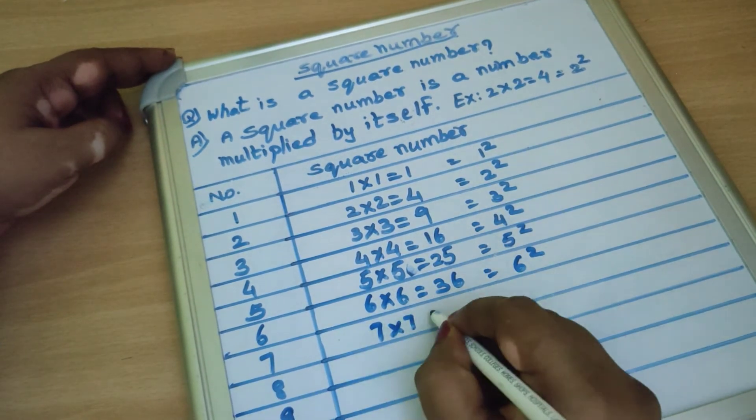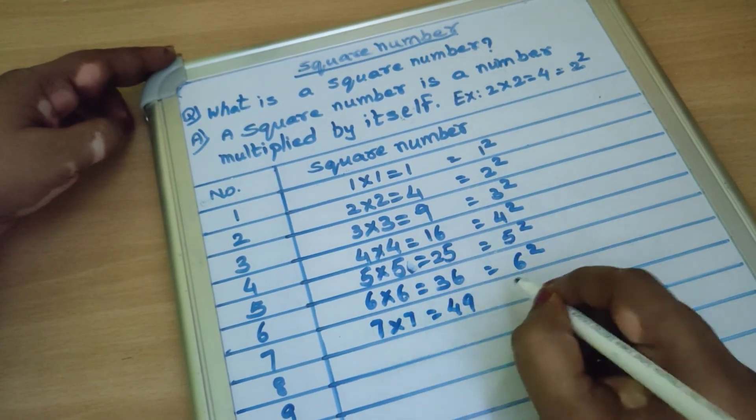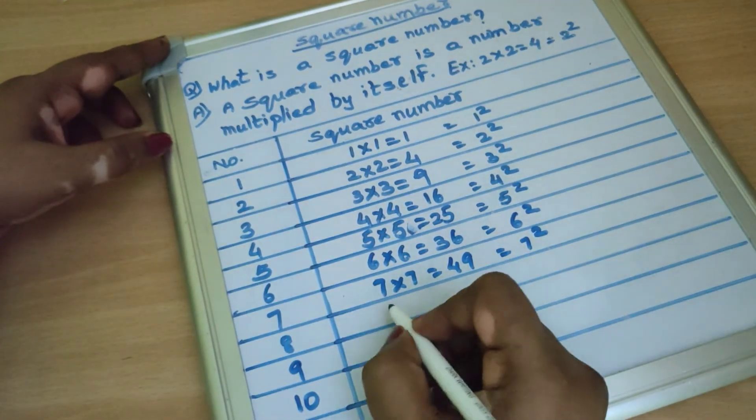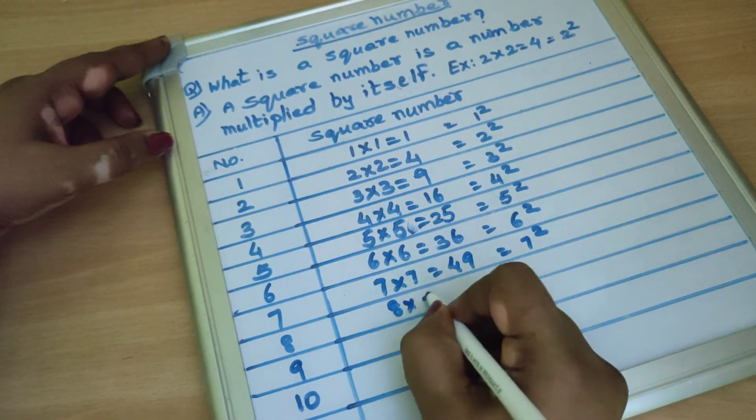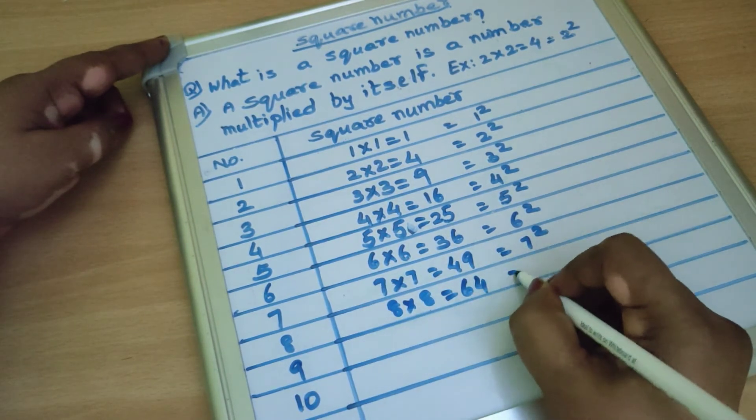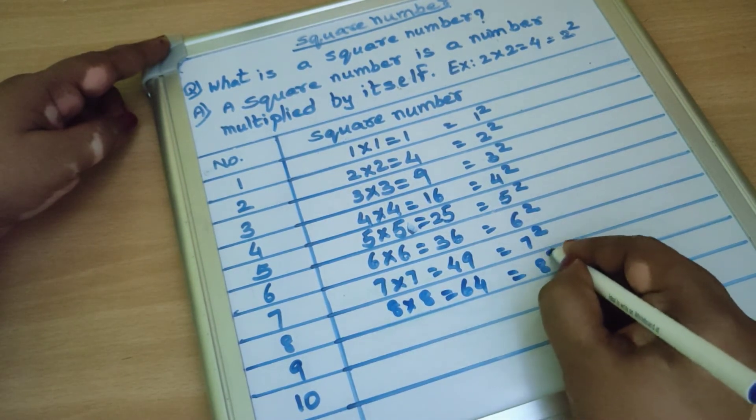7 into 7, 49. We write as 7 square. 8 into 8, 64. We write as 8 square.